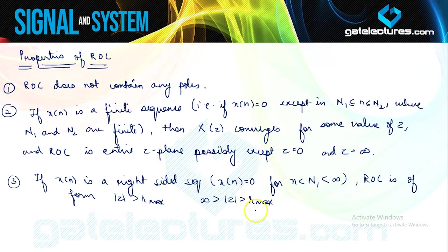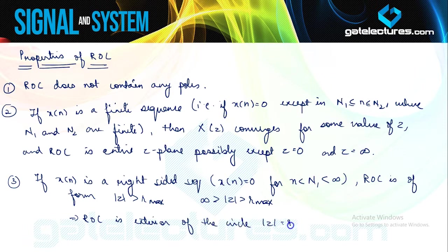The ROC for a right-sided sequence lies outside the circle corresponding to the maximum magnitude pole. Similarly, if x(n) is a left-sided sequence — x(n) is 0 for n greater than n2, for some finite n2 — meaning it lies only to the left of some particular value and is 0 to the right of that value, then X(Z) converges for some values, and the ROC is of the form |Z| less than R_min.